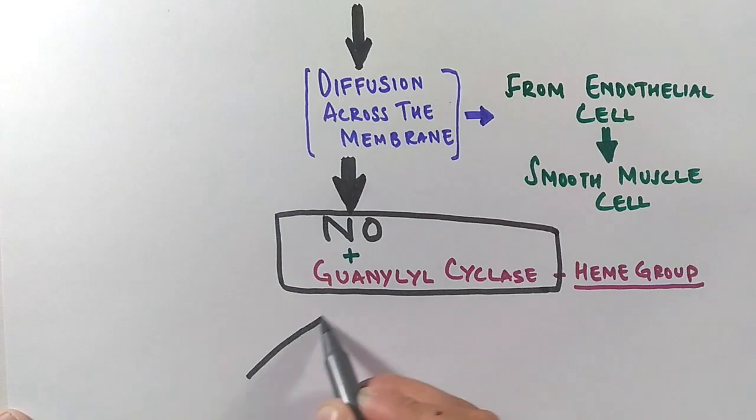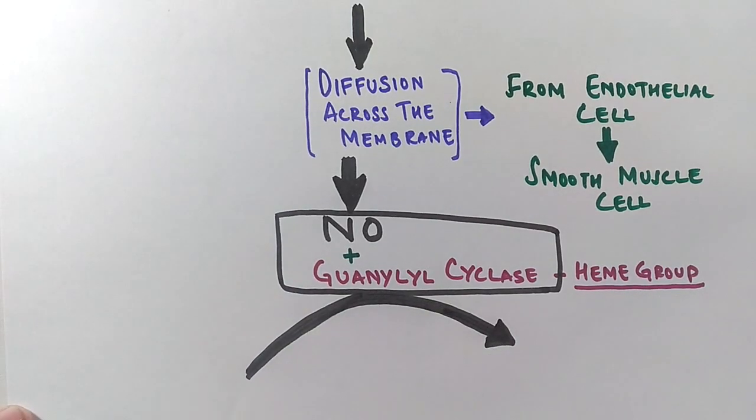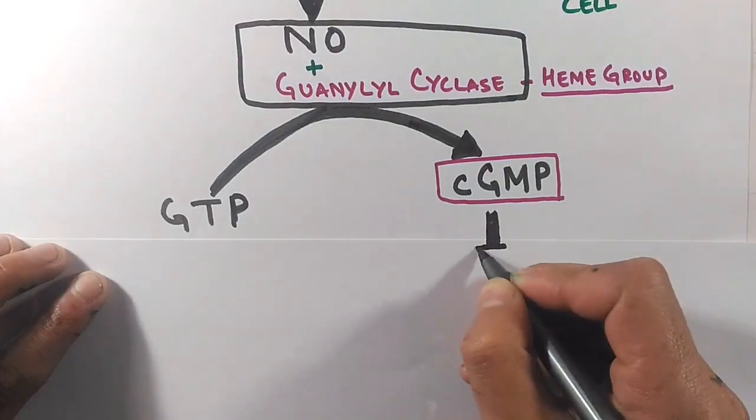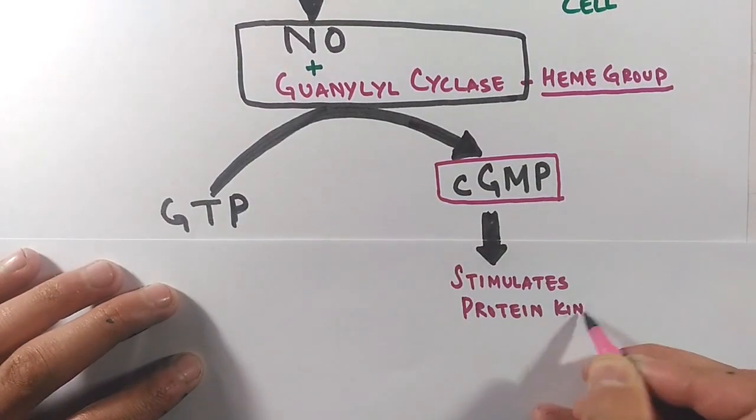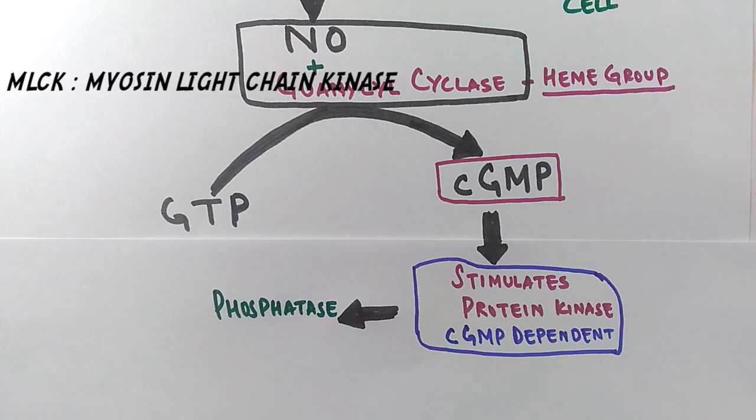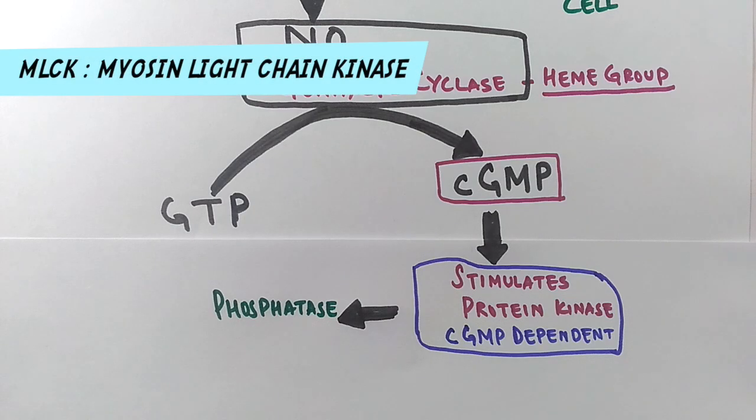This cyclase enzyme converts the GTP form into the cyclic GMP form. The cyclic GMP then stimulates cGMP-dependent protein kinase, which in turn activates the phosphatase enzyme - that's MLCP, myosin light chain phosphatase.